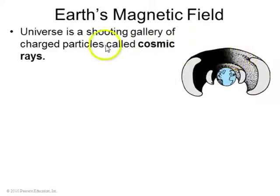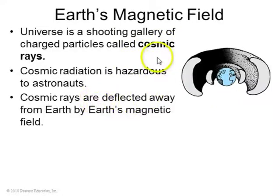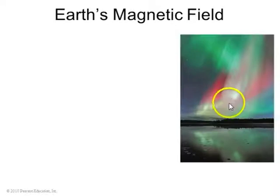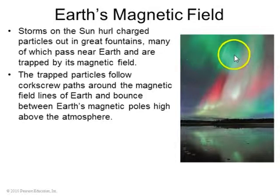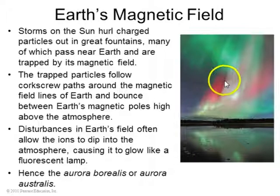Out in space there are many charged particles moving along, which can be hazardous to astronauts as a form of radiation. These cosmic rays are deflected away from Earth by the Earth's magnetic field, which is partly protecting us from radiation. These are the Van Allen radiation belts where the radiation is trapped, while we're safely on the surface of the Earth. Storms on the sun can hurl cosmic rays or charged particles towards the Earth, and they can get trapped in the Van Allen radiation belts. Sometimes they even dip down into the Earth's atmosphere and glow — that's called aurora borealis in the northern hemisphere, or aurora australis in the southern hemisphere.